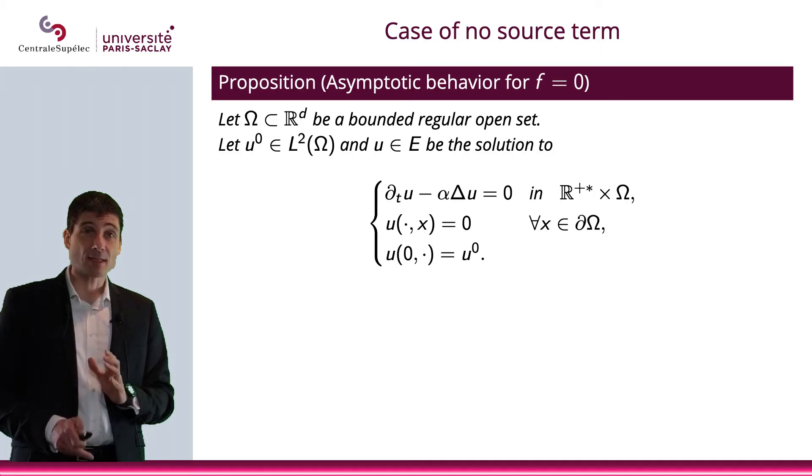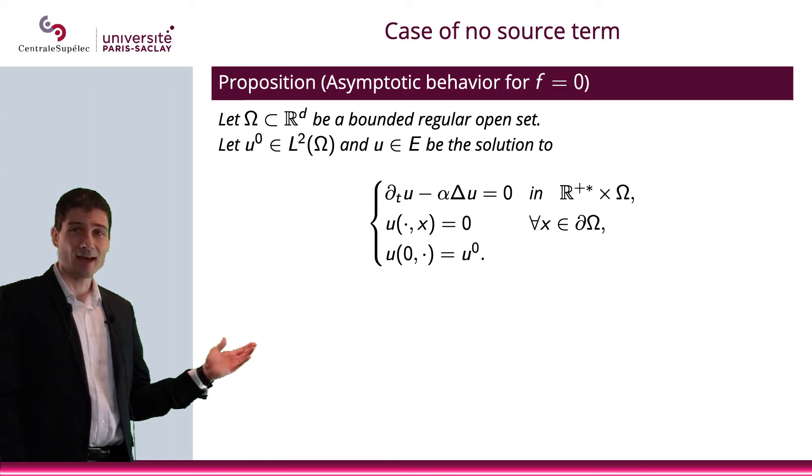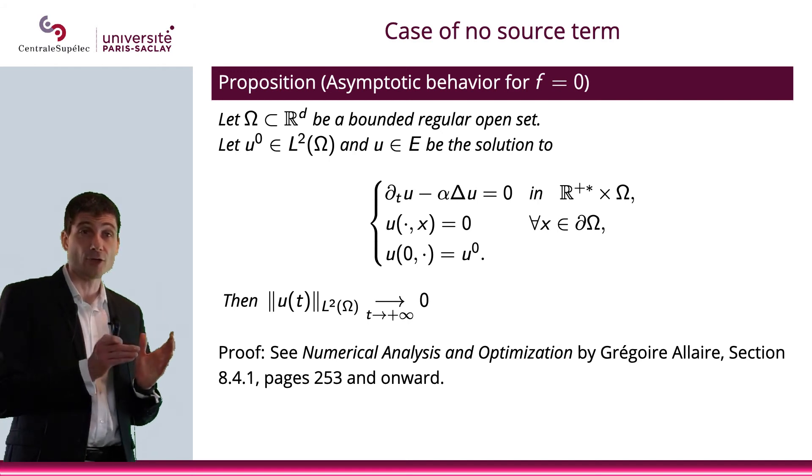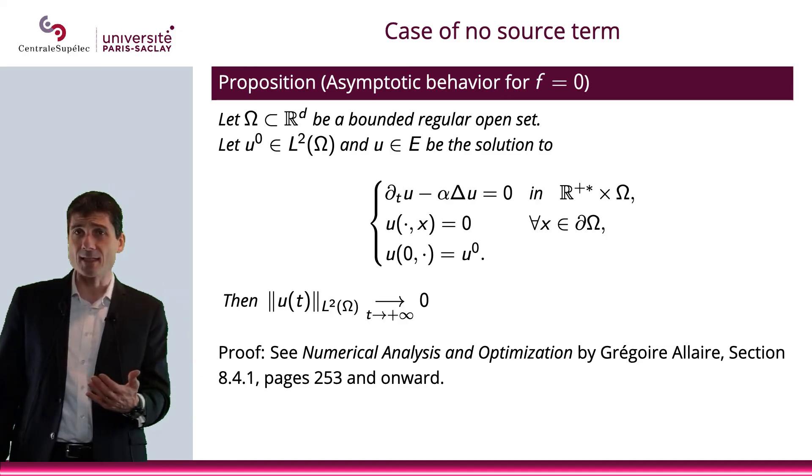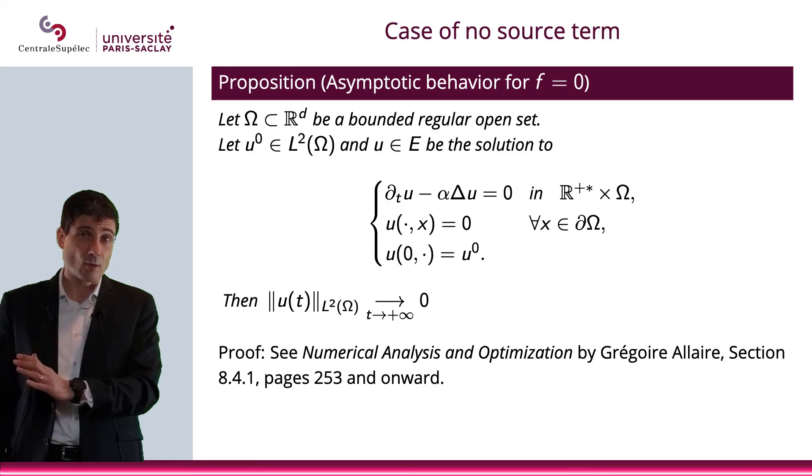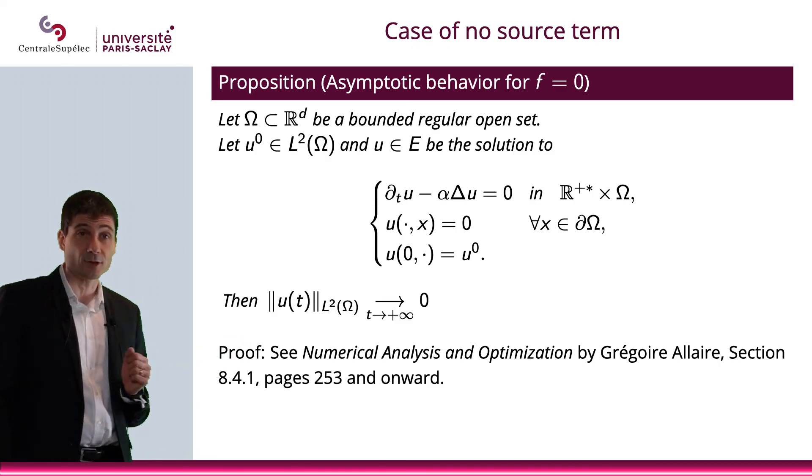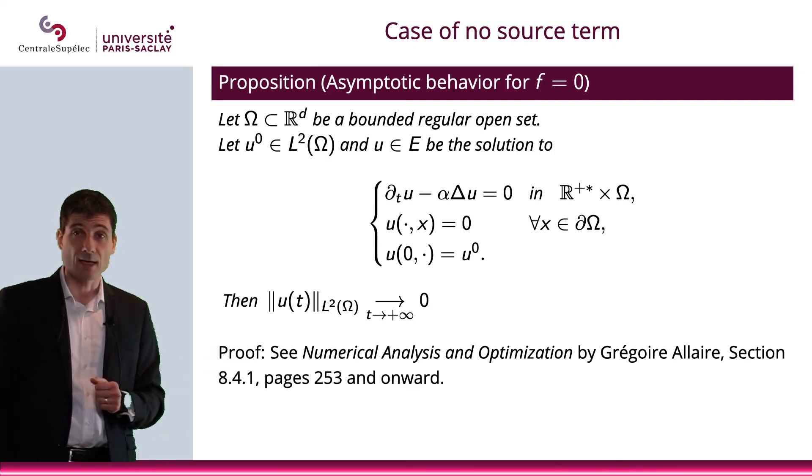Now what happens if f is equal to zero? Well, obviously it's a constant. Zero is a constant. And what we will have is that the norm of ut will go to zero in L2. And this makes sense because we know that the steady state problem, if f is equal to zero, well obviously u bar is equal to zero. So what we're stating is that norm L2 of u of t will go to zero. And here is a reference for the proof of this proposition.